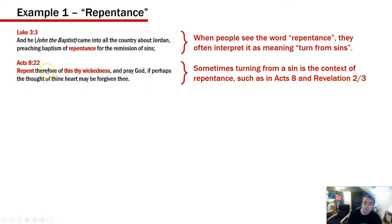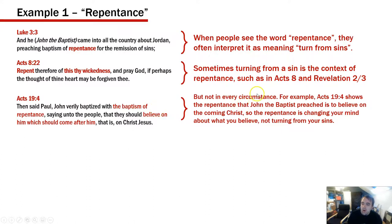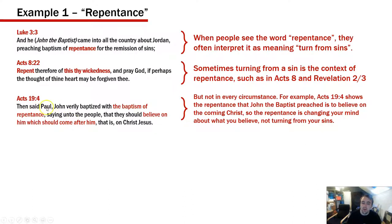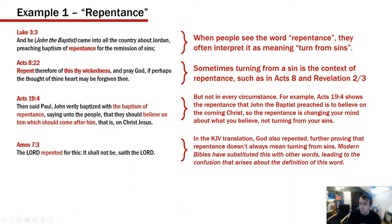Sometimes turning from sin is indeed the context of repentance. Acts 8:22 says 'repent therefore of this thy wickedness,' so in Acts 8, turning from wickedness is the context. However, Acts 19:4 shows that the repentance John preached is to believe on the coming Christ — a change of mind about what you believe, not turning from sins. Moreover, in the King James translation, there are verses where it says God repented, which further proves repentance doesn't always mean turning from sin.